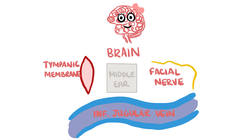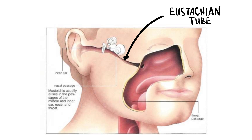Laterally, there's the tympanic membrane. Medially, there's the facial nerve, which can therefore be affected in otitis media. Anteriorly, there is a thin plate of bone with an opening for the Eustachian tube, separating the middle ear from the internal carotid artery. The Eustachian tube connects the middle ear to the nasopharynx and its role is to equalise the pressure between the middle ear and the atmosphere and prevent tympanic membrane rupture.